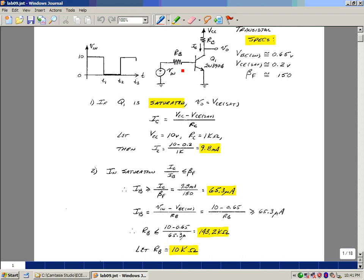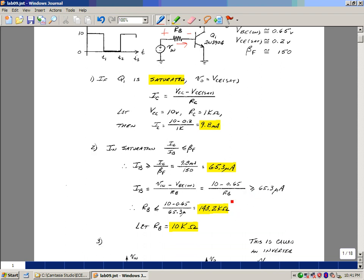What is the base current? Well, it's the current flowing into the base. It's this node voltage minus this node voltage divided by R sub B. So we've got 10 minus 0.65 over R sub B. That needs to be greater than or equal to 65.3 microamps. So we could solve for R sub B, and we've got this relationship that the resistor needs to be smaller than 143k. Let's pick something dramatically different that we can guarantee saturation. I'll just pick a 10k resistor.